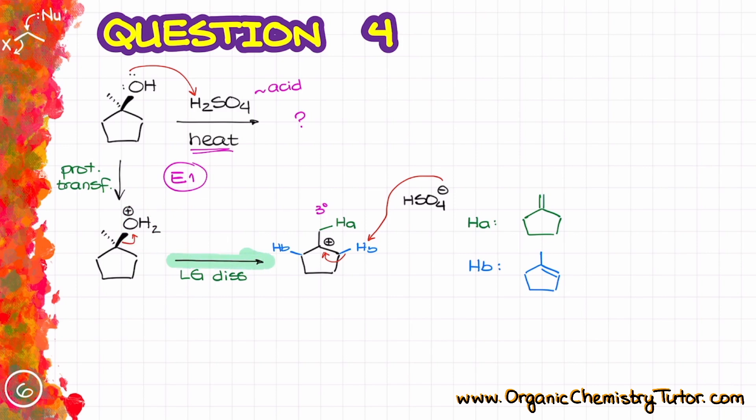After that we have our leaving group dissociation and once my leaving group pops off we form a tertiary carbocation. That tertiary carbocation is unlikely to rearrange into anything else simply because we do not have anything more stable than this tertiary carbocation that we could potentially make. So the next thing that I'm going to do I'm going to look at my beta hydrogens. So I have a couple of beta hydrogens those HBs which are exactly the same and I have my hydrogen A or proton A on the methyl group over here. So those going to give me two different products and like in one of my previous examples I'm going to look at the substitution at my double bond.